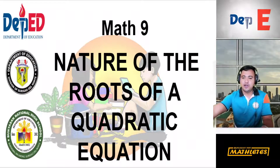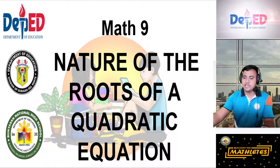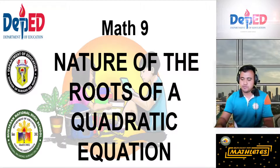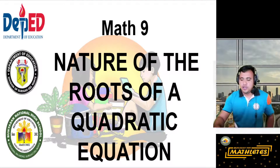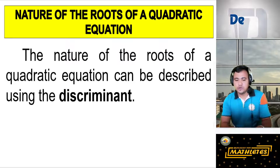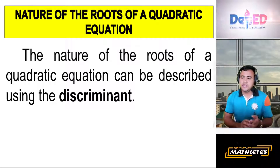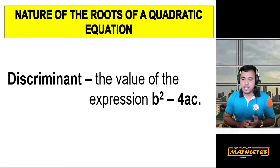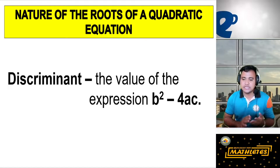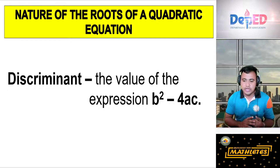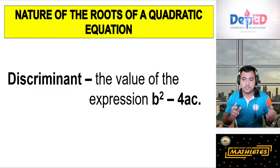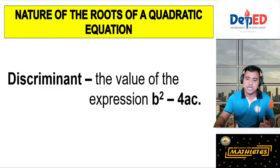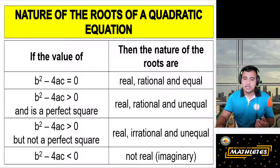The nature of the roots of a quadratic equation can be described using the discriminant. The discriminant is the value of the expression b squared minus 4ac.